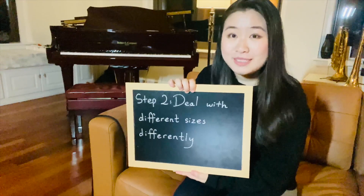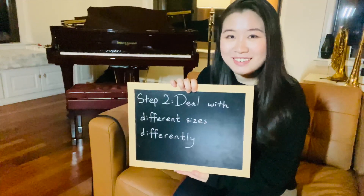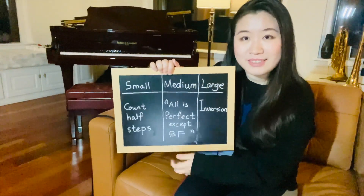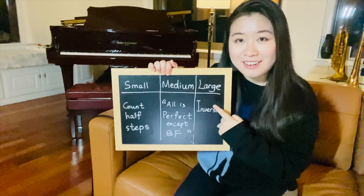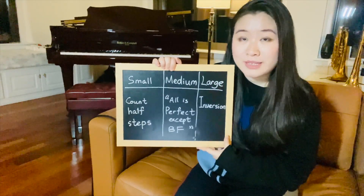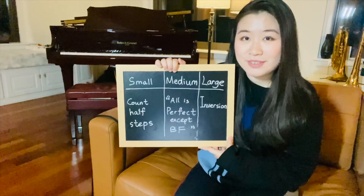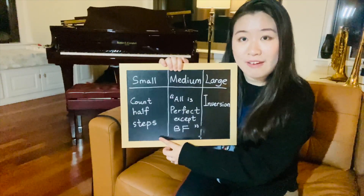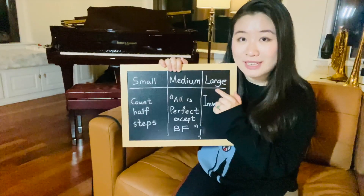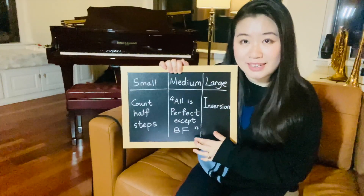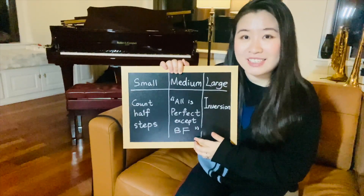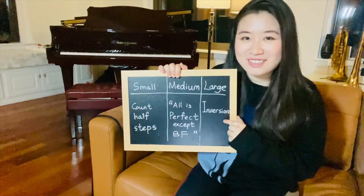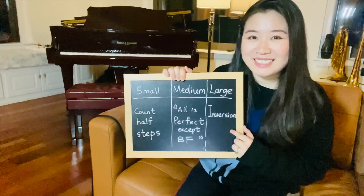Step two: deal with different sized intervals differently. Earlier we divided the intervals into three different categories — small, medium, and large. This is where that comes in handy, because we'll be dealing with each category using different techniques. If the interval is small, we'll be counting half steps. If the interval is medium sized, we'll be using a technique called 'all is perfect except B-F.' And if the interval is large, we'll be doing inversions.